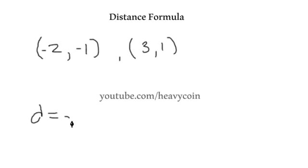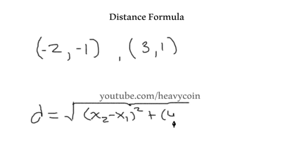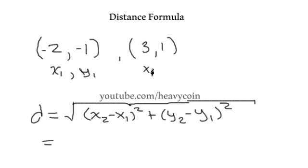Alright, so distance, first thing we're going to do is write up the distance formula. And, so this is, remember, x of 2 minus x of 1 squared plus y2 minus y1 squared. Okay, so this is going to be our x of 1, y of 1, x of 2, and y of 2.